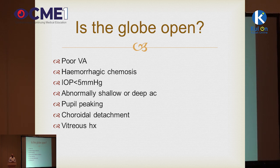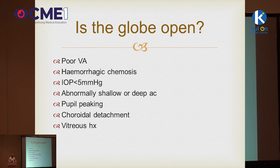Additional signs of globe rupture include vitreous hemorrhage, choroidal hemorrhage, choroidal detachment, dislocated intraocular lens, and macular hemorrhage. If someone has very thick conjunctiva with 360 degrees of hemorrhage and a low intraocular pressure, you should be very suspicious of a globe rupture. The pressure doesn't have to be zero — it's often between 3 and 8 mmHg. A peaked pupil is also suspicious for a full-thickness laceration.